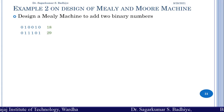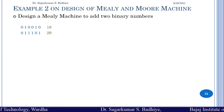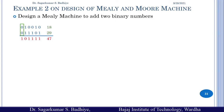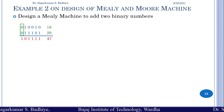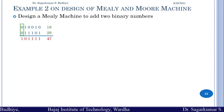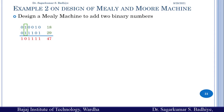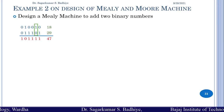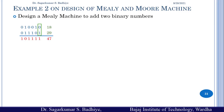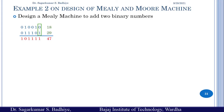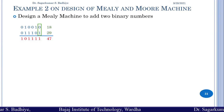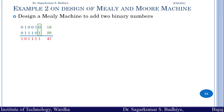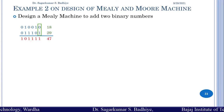Whenever we add two binary numbers, we can have the following combinations of bits from the first and second binary number. The first combination is when both numbers have zero. The second is when both have one. The third is when the first has one and the second has zero. The input we consider for the Mealy machine will be pairs of 0 and 1.